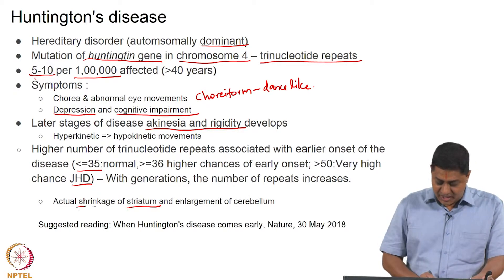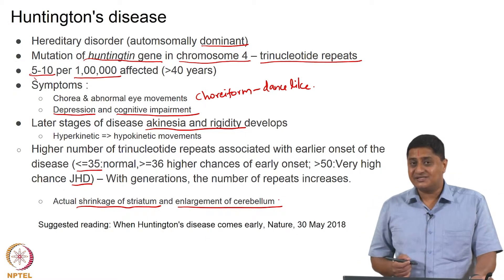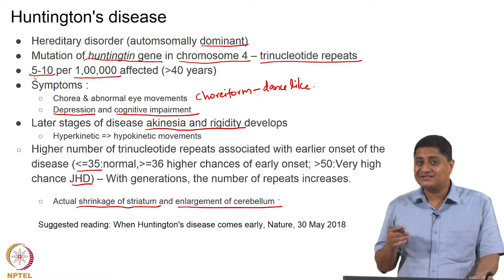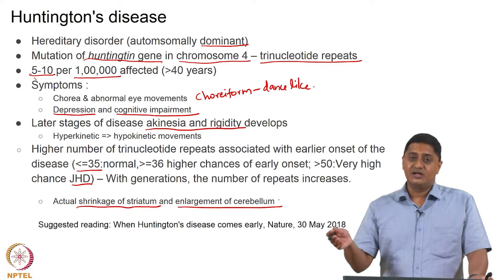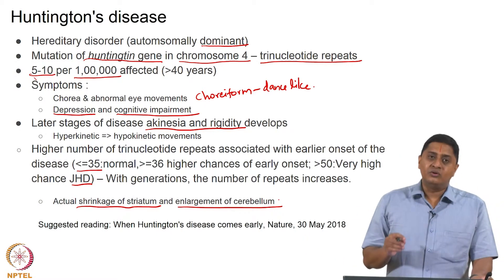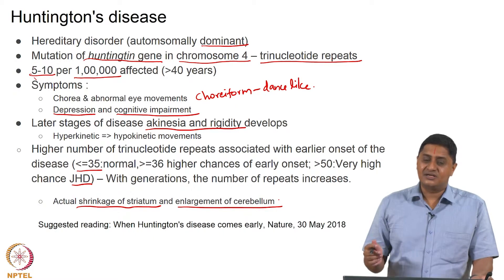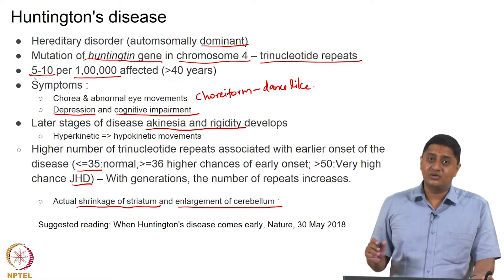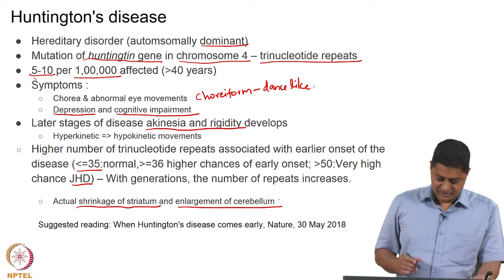In children with JHD, there is actual shrinkage of the striatum and an enlargement of the cerebellum. This is maladaptation due to pathology. This leads to a situation where the child does not go through the choriform stage and directly reaches rigidity. People in whom the disease sets in at an early age, as in juvenile Huntington's disease, have a higher chance of directly going to the rigidity form without going through the dance-like chorea symptom.